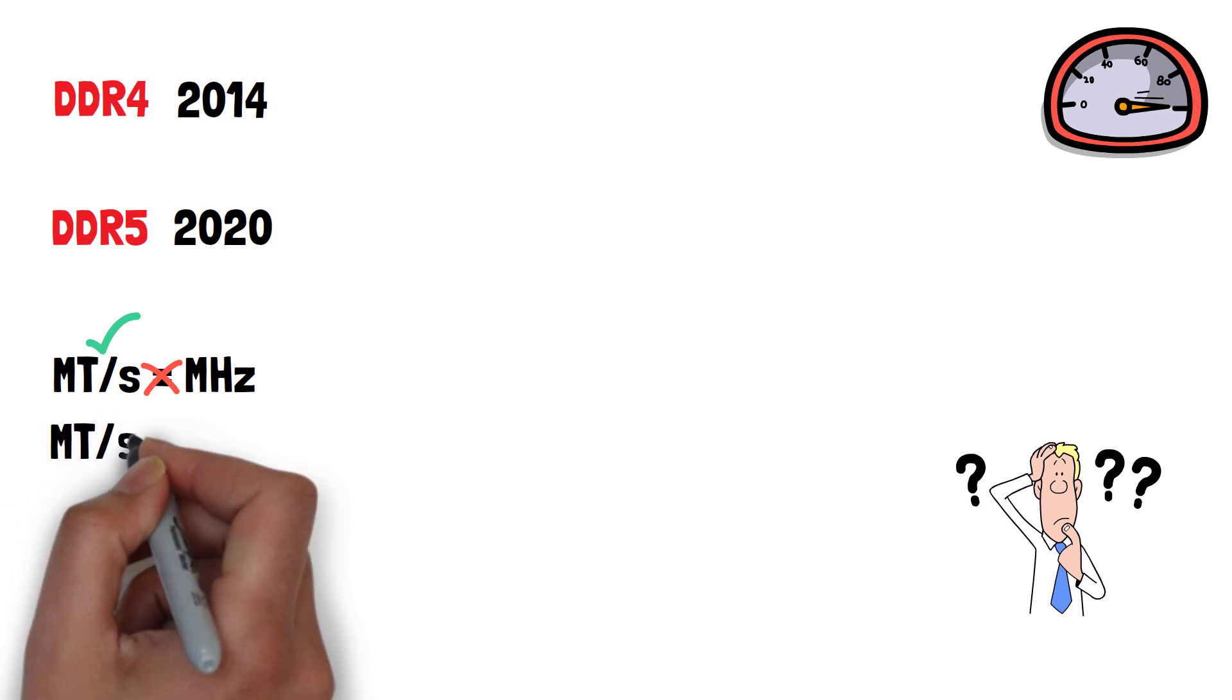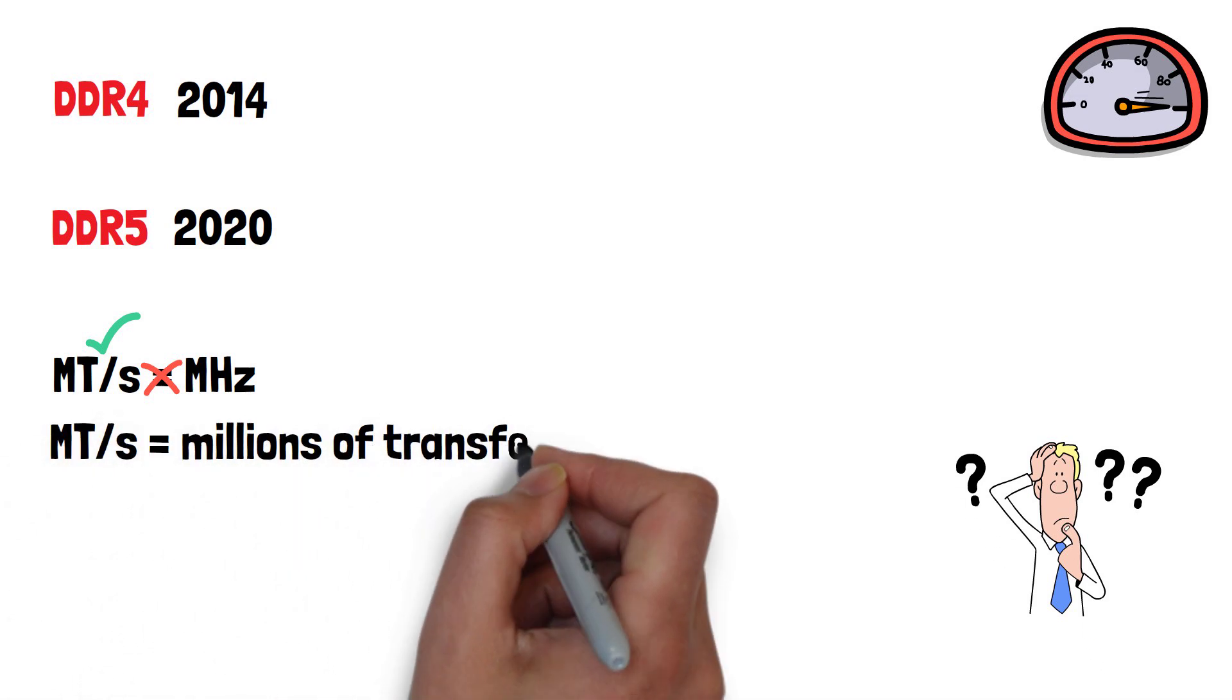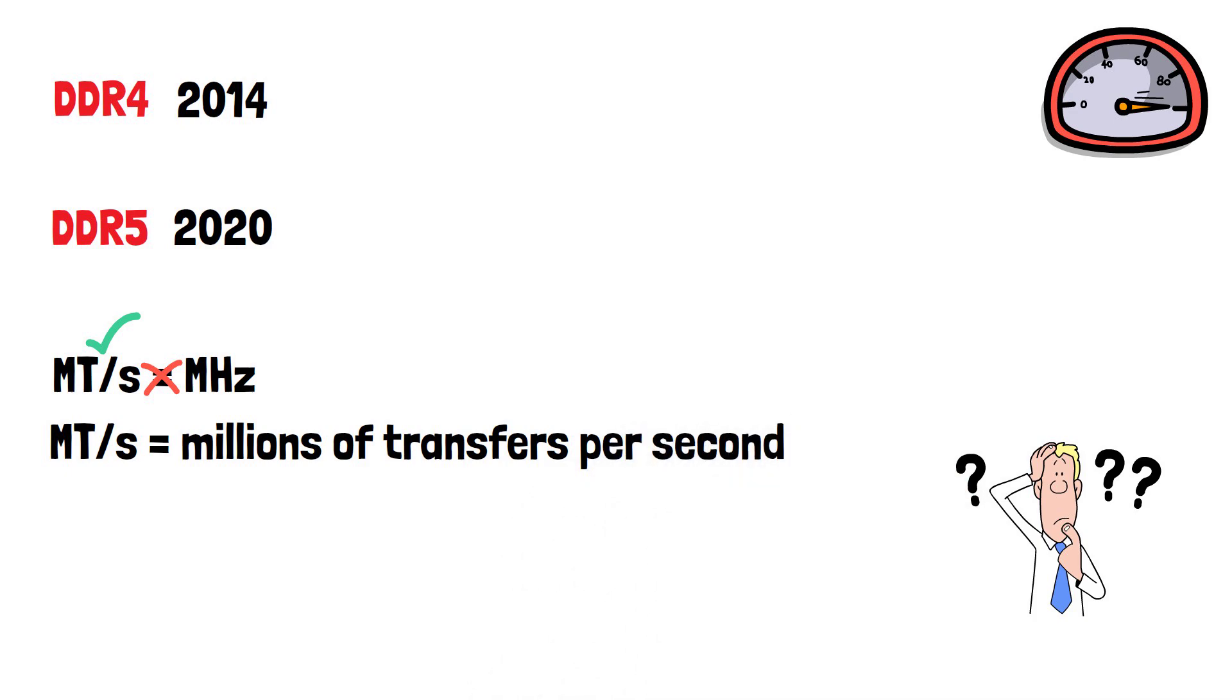This refers to how many megatransfers, or 1 million transfers, are done per second by the RAM, whereas MHz is megahertz and refers to the clock speed. The manufacturer's website should tell you the megatransfers per second speed if you're unsure.